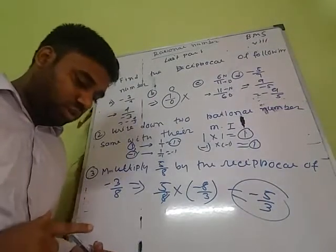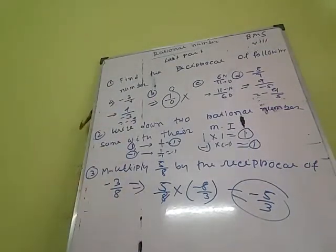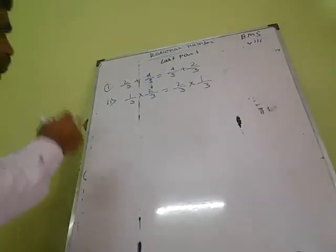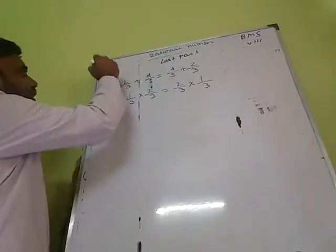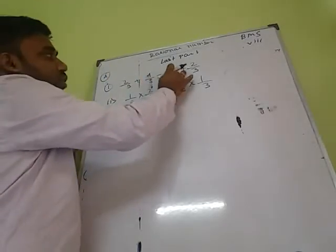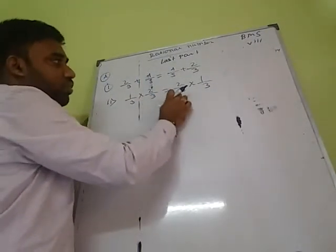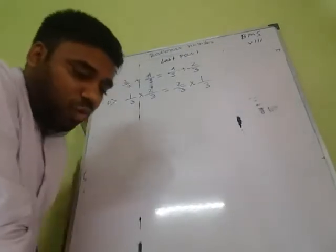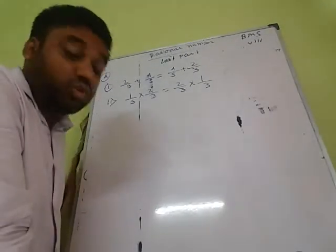Question number 4. The question involves expressions such as 2 by 3 plus 4 by 5 plus 4 by 9 plus 2 by 3 and 1 by 3. We need to identify what properties the following expressions illustrate.